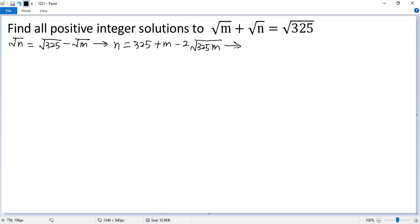But we know 325 equals 5 squared times 13. So we get n equals 325 plus m minus 2 times square root of 5 squared times 13 times m.